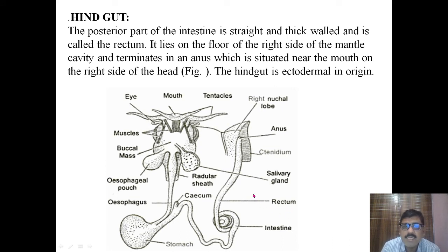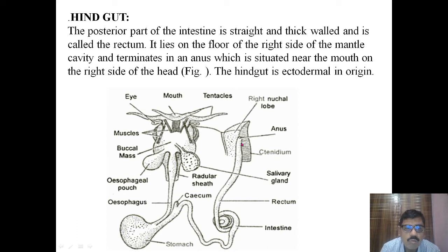The rectum lies on the floor of the right side of the mantle cavity and terminates in an opening called the anus, which is situated near the mouth on the right side of the head. The hindgut is ectodermal in origin.